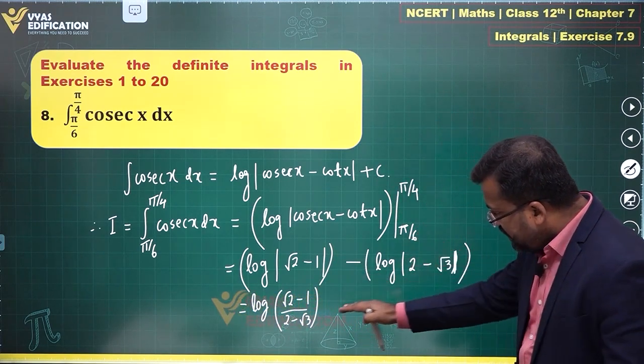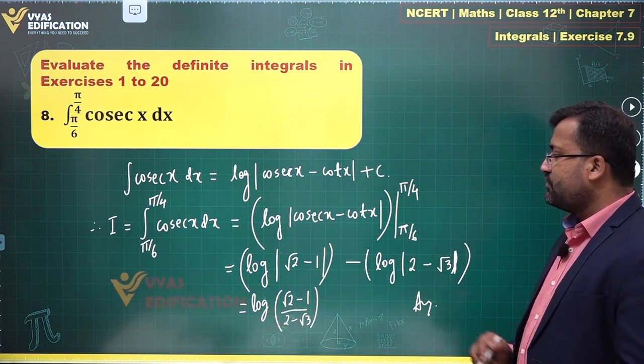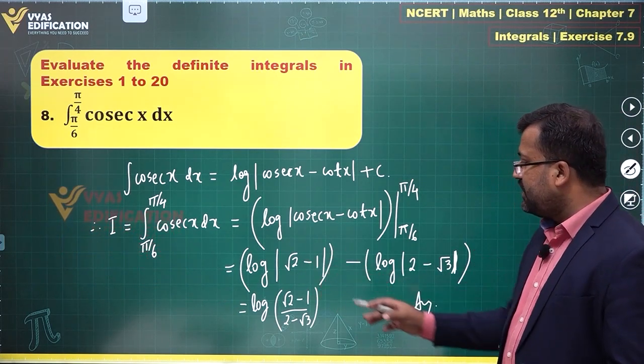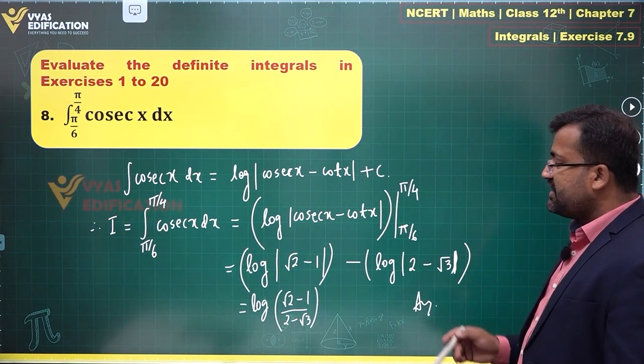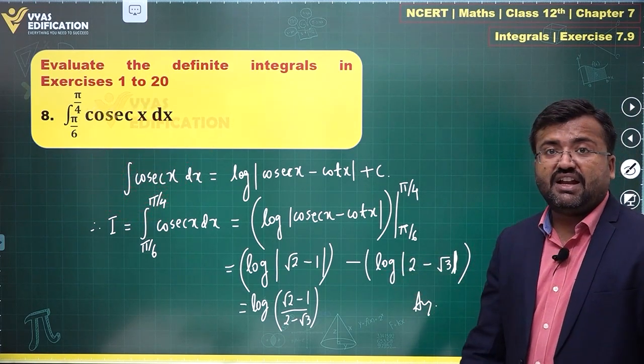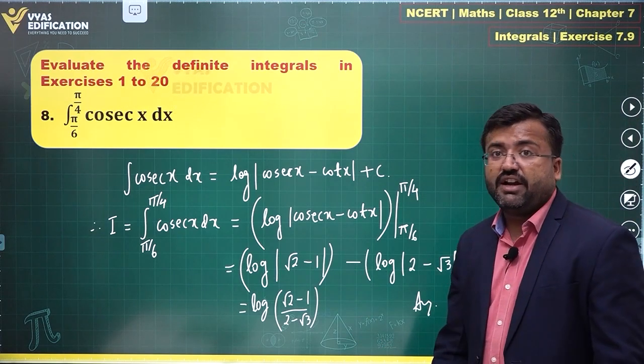Either this or this is your final answer for this question. √2 minus 1 is positive, so modulus can be removed and replaced with the normal bracket. 2 minus √3 is also positive, modulus can be replaced with the normal bracket. This or this can be my final answer.